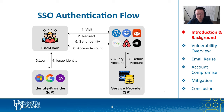In SSO authentication, there are three parties involved: namely end-user, service provider, and identity provider. First, the end-user visits service providers such as Dropbox or eBay and initializes the authentication process. The SP redirects the end-user to an identity provider like Google and asks the end-user to log in. Upon successfully logging in, the end-user receives the identity issued by the IDP and sends it back to the service provider. The SP searches its database for a user account that matches the provided identity and grants the user access to the account.